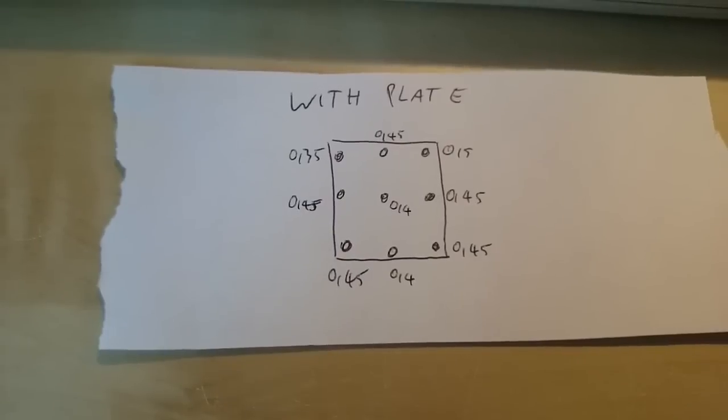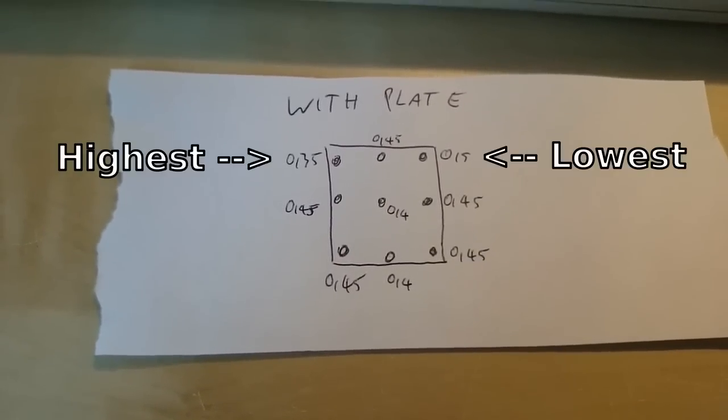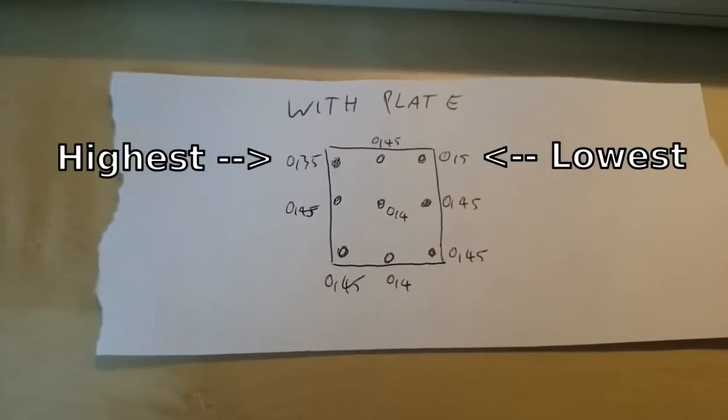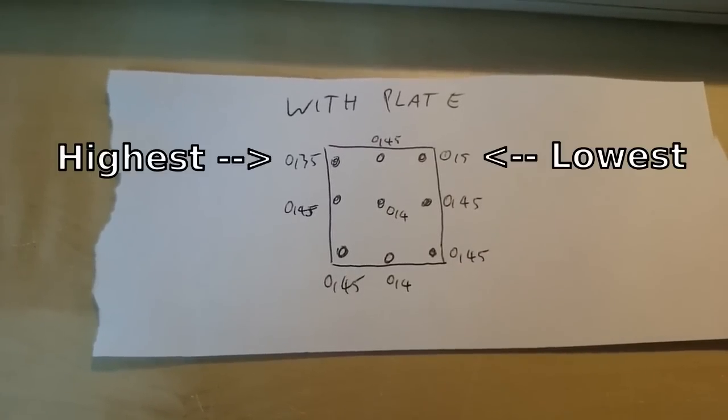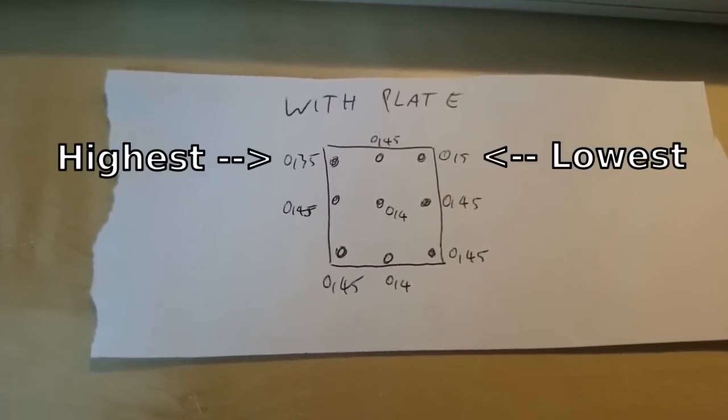The lowest point was 0.15 millimeters away from the highest point. I had to correct the height of the table plate a bit and I did that by putting some layers of paper under the plate.